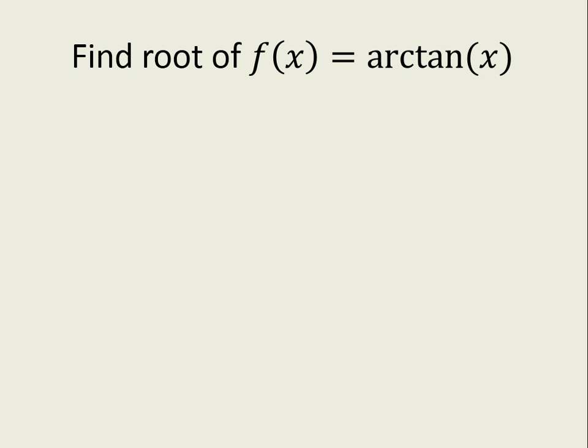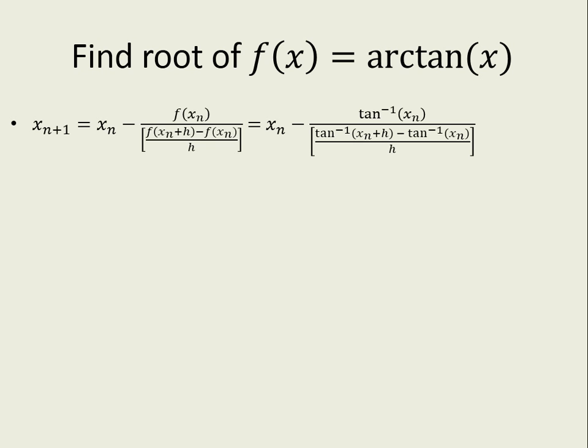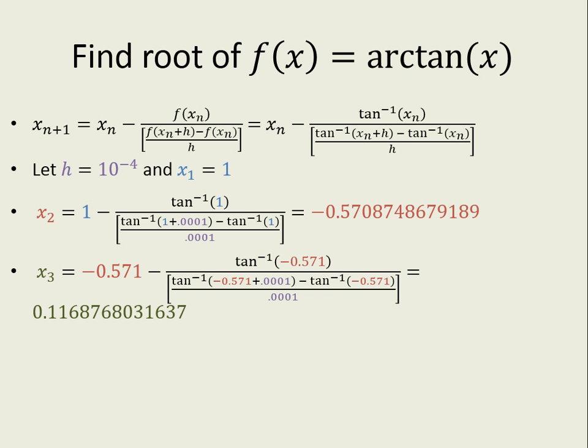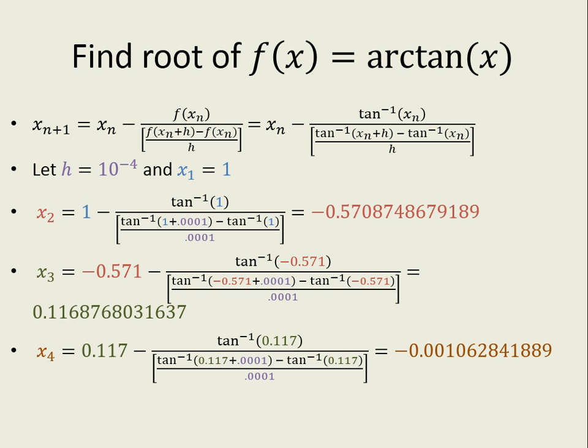Let's use that finite difference method to find the root of the arctan of x. Now we know the root is zero, but just go along with it. We'll swap our function with arctan, and we'll go ahead and pick h to be 10 to the minus 4, and start at the point 1. When we plug one in, we'll get negative 0.57. Use that to find x3. Use that to find x4, and eventually it'll converge to zero.